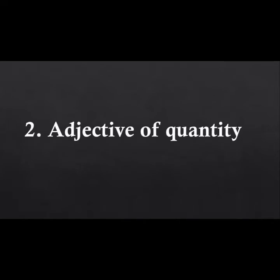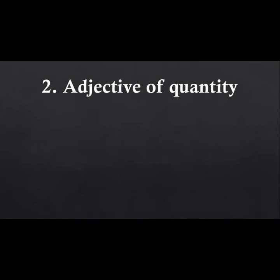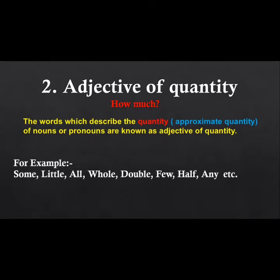The next one is adjective of quantity, called 'pariman vachak visheshan' in Hindi. Adjective of quantity answers the question: how much? It describes the approximate quantity — not exact, but approximate — of nouns and pronouns. Examples include: some, little, all, whole, double, few, half, any, etc. These are approximate quantities.